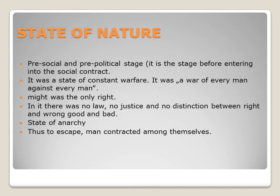The second point of social contract theory is the state of nature. It was a pre-political state — there were no laws, there was anarchy, no justice, no boundaries, no limitations, and there was constant war. Hobbes assumes the existence of the state of nature and characterizes it as a pre-social phase of human existence.